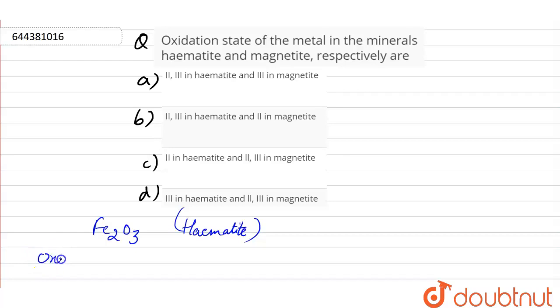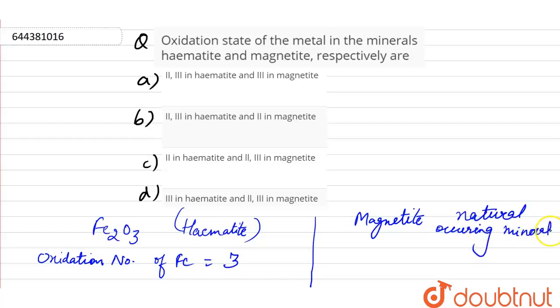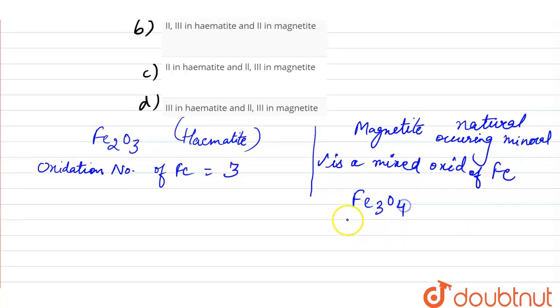Here the oxidation number of iron is 3, whereas magnetite, which is the natural occurring mineral, is a mixed oxide of iron that is Fe3O4, which is written as FeO·Fe2O3. In magnetite, oxidation number of Fe exists in both 2 and 3.